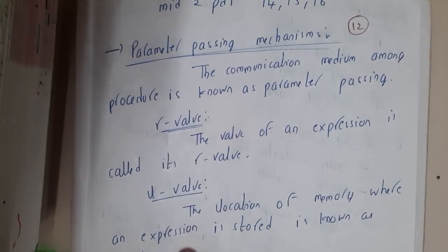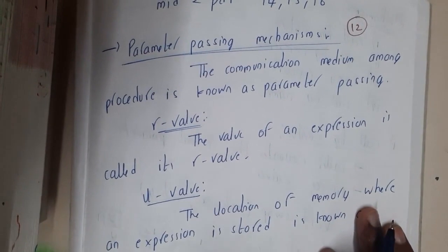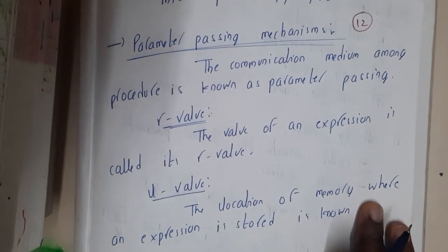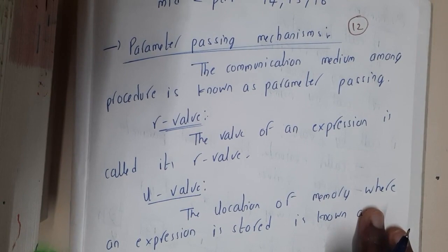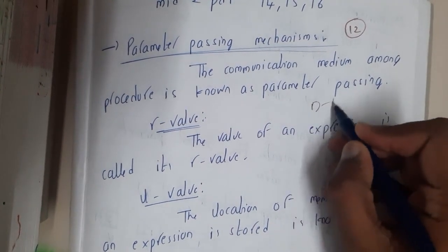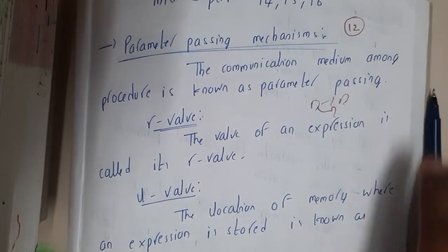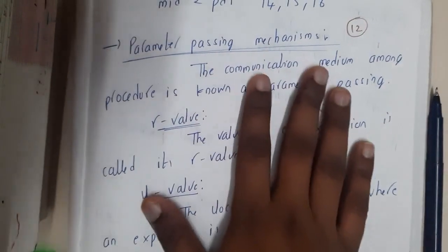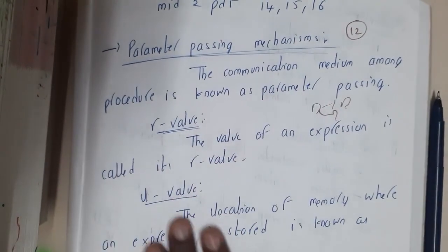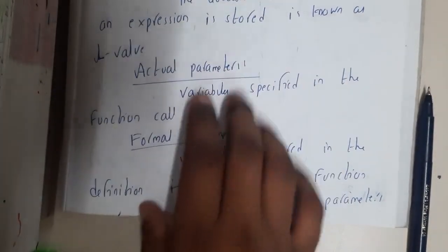Hello guys, we are back with our next lecture. In this lecture, let us go through parameter passing mechanisms. The communication medium among procedures is nothing but parameter passing — basically when a function is calling another function, if we are passing any kind of values or data in between them, that process is nothing but the parameter passing mechanism.